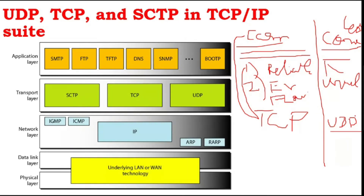UDP is a connectionless protocol — there is no error control, no flow control, it is an unreliable protocol. So when would you use UDP? If you want faster transfer without worrying about reliability, you use UDP.